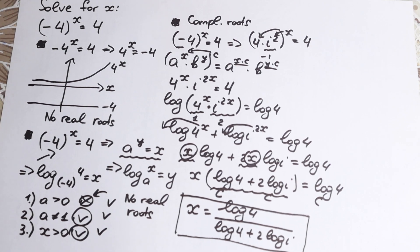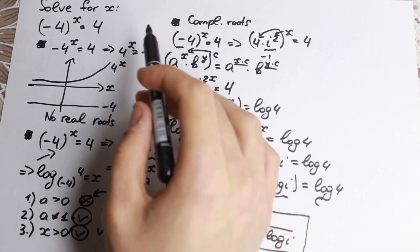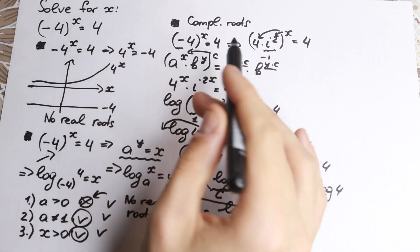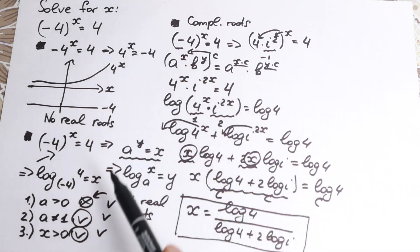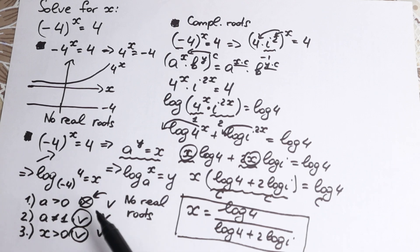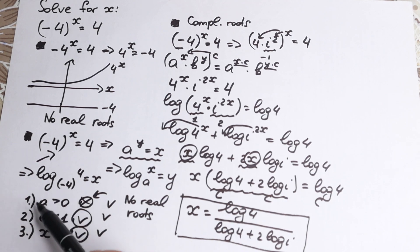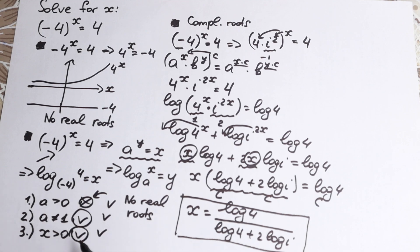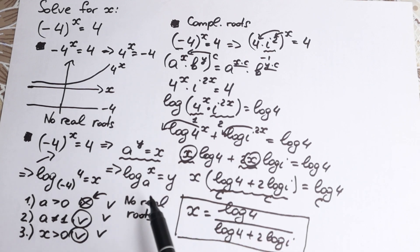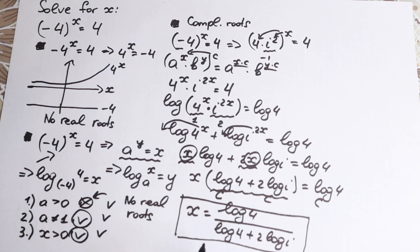This is a really interesting question. I want you to write notes about it, because this is not a school problem — it's a tricky one. We have a base of minus 4, which is negative, and we proved that there are no real roots because the base cannot be negative. Since that main rule is not satisfied, we have no real roots, and the complex root we found is the full solution.